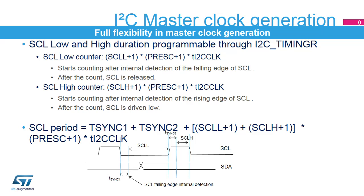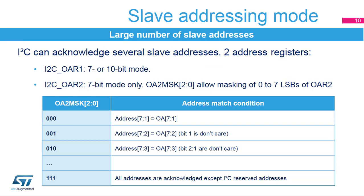The I2C slave can acknowledge several slave addresses. The slave addresses are programmed into two registers. Own Address Register 1 can be programmed with a 7- or 10-bit address. Own Address Register 2 can be programmed with a 7-bit address, but the least significant bits of this address can be masked through the OA2MSK register in order to acknowledge multiple slave addresses. The two own address registers can be enabled simultaneously.